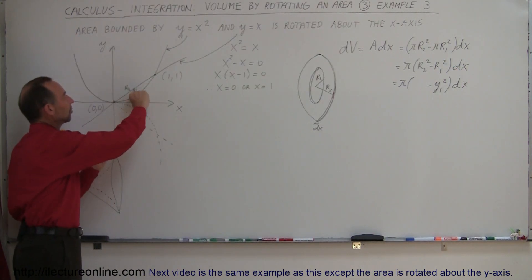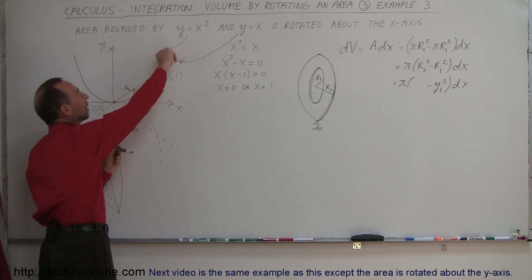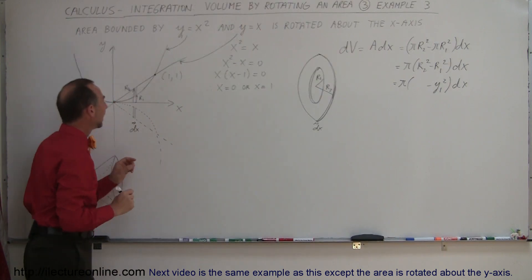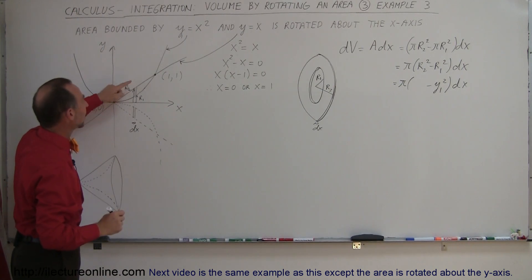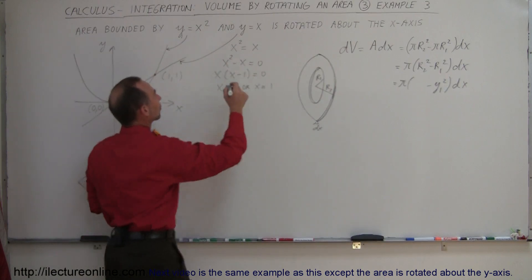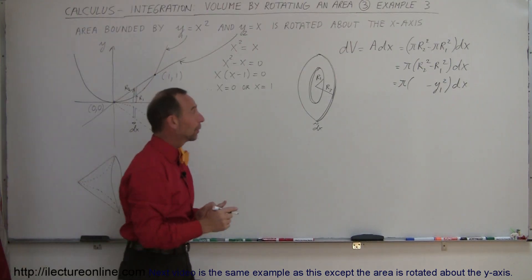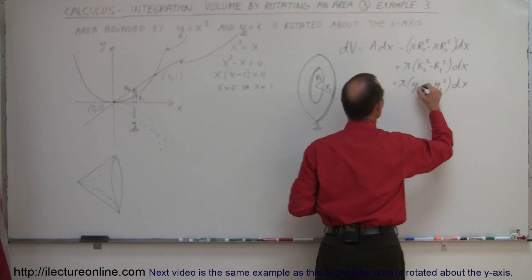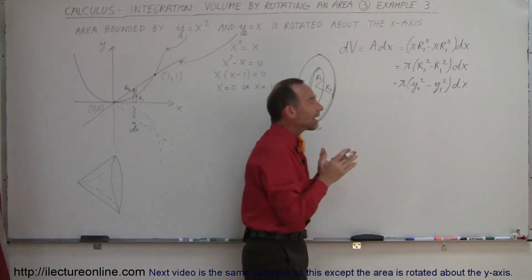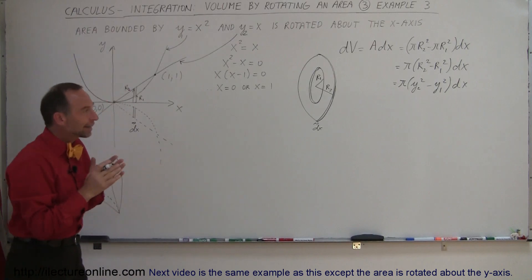So this can be written as π times y1 squared. And r2—wait, no, I've got r2 there, so I was talking about r1. That would be minus y1 squared dx. So I replaced r1 by y1, which is correct, right here.